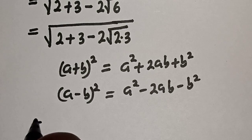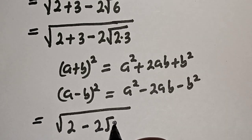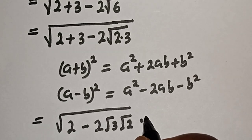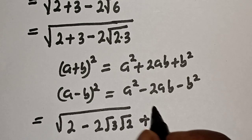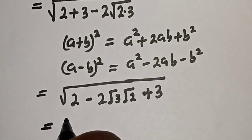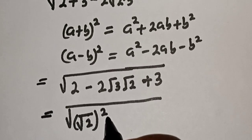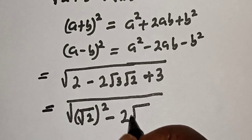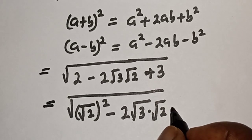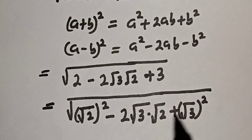So we have square root of 2 minus 2 times square root of 3 times square root of 2, plus 3. Now in this case we want to compare this expression with the identity. This is equal to square root of (root 2)² minus 2 root 3 multiplied by root 2, plus (root 3)², in relation to this form.